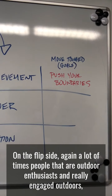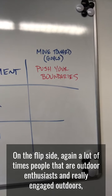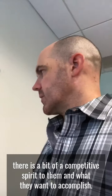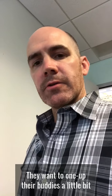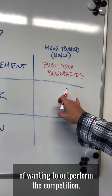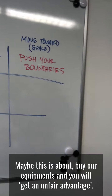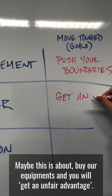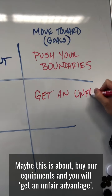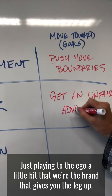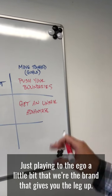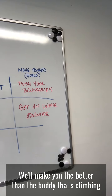On the move-toward side for power, a lot of outdoor enthusiasts have a competitive spirit — they want to one-up their buddies and make sure they have a leg up. So perhaps there's a strategy built around wanting to outperform the competition: maybe something like 'buy our equipment and you will get an unfair advantage.' This plays to the ego a little bit — we're the brand that makes you better than the buddy climbing and hiking next to you.